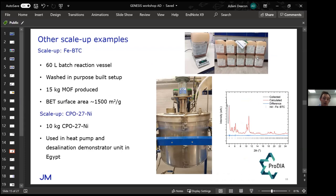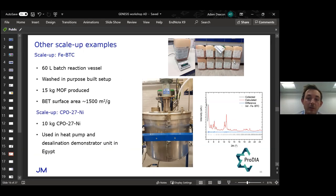We scaled up 15 kilograms of iron BTC for another project using a 60 liter vessel. We're lucky enough in Johnson Matthey to have access to many different equipments, large scale equipments that we can use and try. We were able to produce a phase pure material with the right specific characteristics. In addition, we managed to produce a 10 kilogram batch of nickel CPO which was used in a demonstrated unit in Egypt for heat pumps and desalination technology.